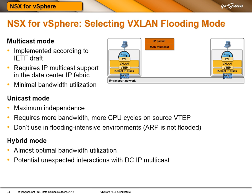The NSX edge can run routing protocols with a LISP-capable switch, enabling that switch to know about the IP subnets at its site and register them with LISP, supporting optimal routing between data centers.